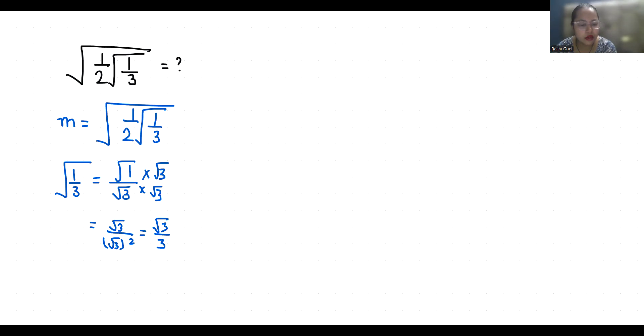Which is equals to m equals under root 3 by 6, so m is equals to under root double under root 3 by under root 6.